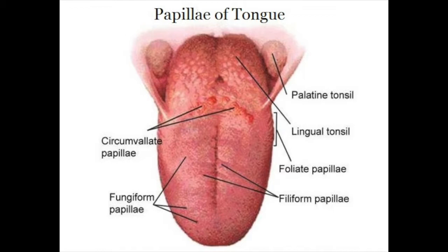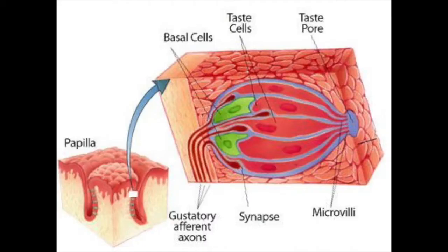The least abundant papilla is the circumvallate papilla. A normal person has anywhere between 6 to 12 of these papilla, which are oriented in a V-shaped pattern at the proximal end or base of the tongue. These papilla are used in tasting bitter taste and assist in the gag reflex. All taste buds, no matter which papilla they belong to, consist of 50 to 100 epithelial cells of two major types: the gustatory epithelial cells and the basal epithelial cells.